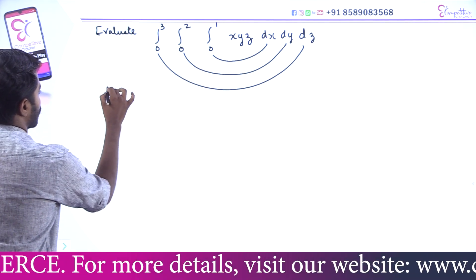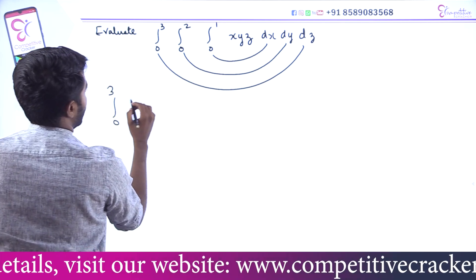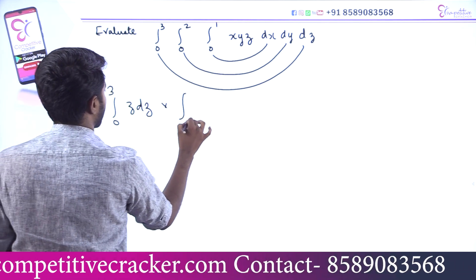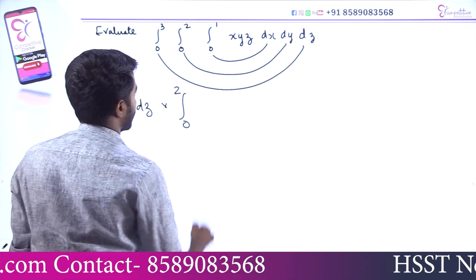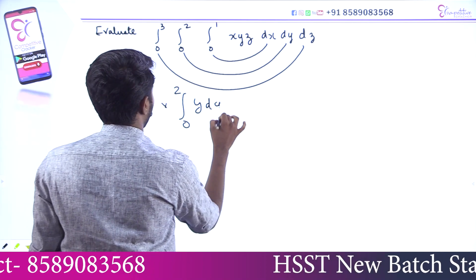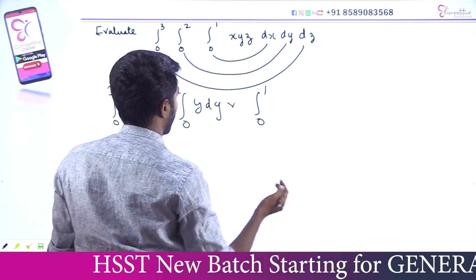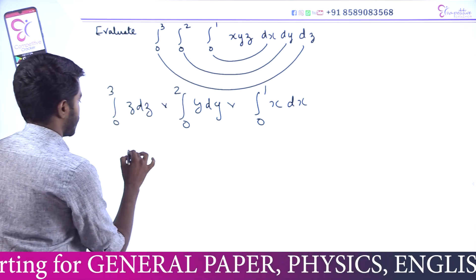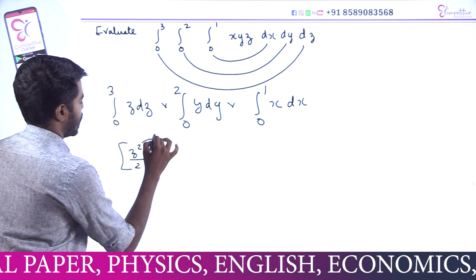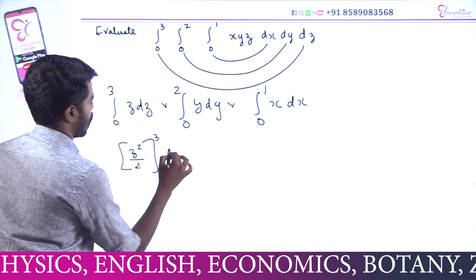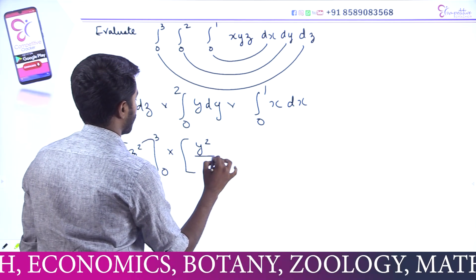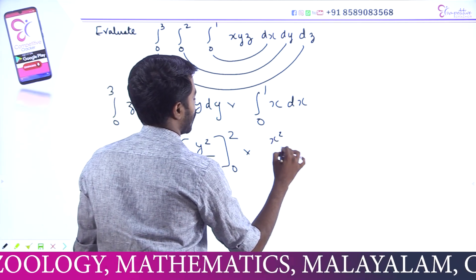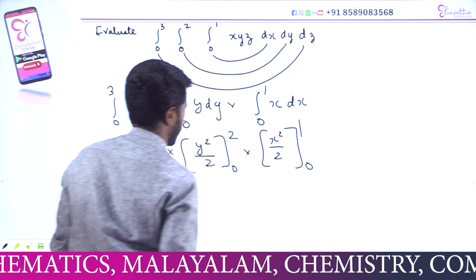That is integral 0 to 3 with respect to z, then integral 0 to 2 with respect to y, then integral 0 to 1 of x with respect to x — x dx. Very simple. Integrating z gives z² by 2, limit 0 to 3; integrating y gives y² by 2; integrating x gives x² by 2, limit 0 to 1.